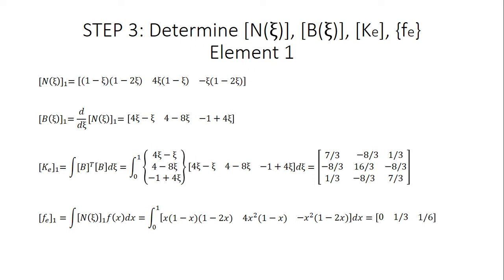The third step is to determine the interpolation function matrix, the B matrix, the element stiffness matrix, and the F matrix for each element. For element 1, the interpolation function matrix is formed by pulling the interpolation functions into matrix form. The B matrix is obtained by taking the partial derivative of the interpolation function matrix with respect to z. The element stiffness matrix K^e1 is computed as the integral of B-transpose times B from 0 to 1, which gives us a new matrix.